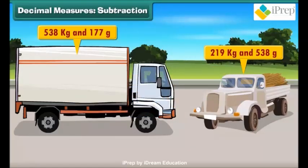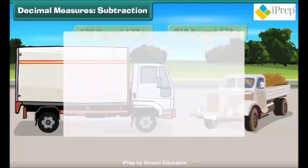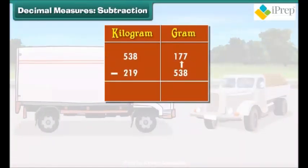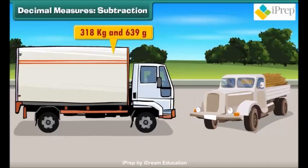We can find the extra load in the first truck by subtracting second quantity from the first, following the same way as used in case of addition. Since 538 grams cannot be subtracted from 177 grams, so 1 kilogram is borrowed from 538 kilograms. It is converted into grams and added to 177 grams to get 1177 grams, subtracting 538 grams from 1177 grams while subtracting 219 kilograms from 537 kilograms, 318 kilograms is obtained. Thus, 318 kilograms and 639 extra grams load is there in the first truck.